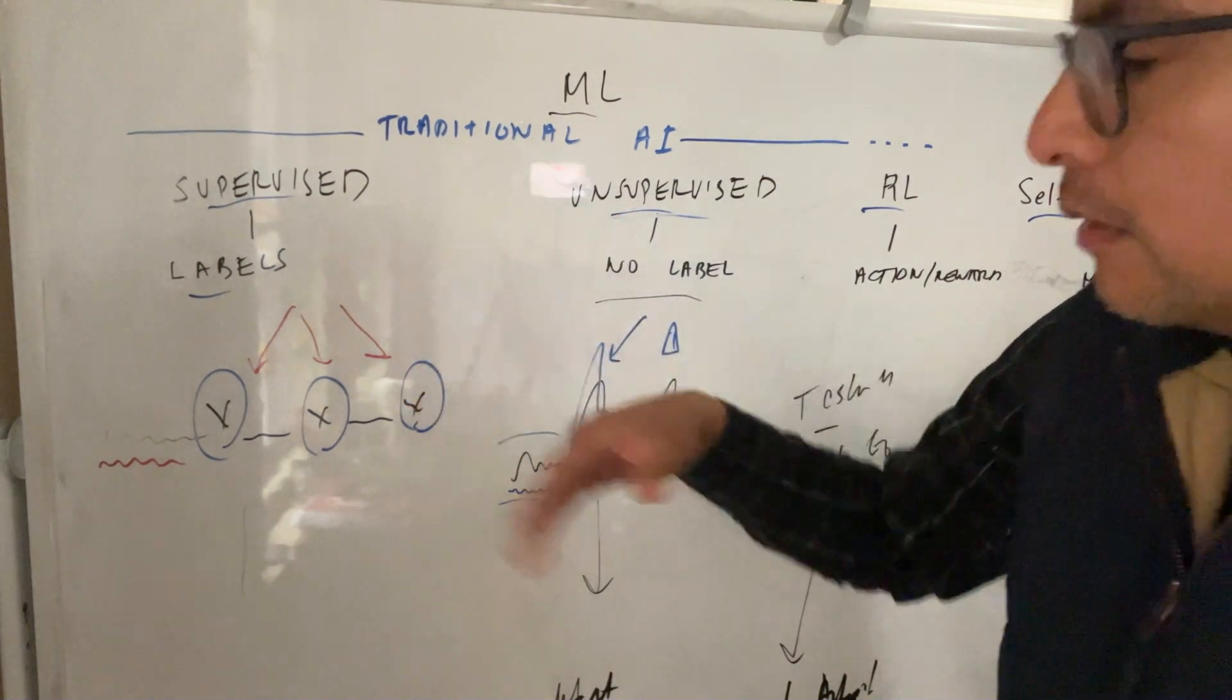Essentially, what we do is we feed a large corpus of text into an algorithm, and we ask it to mask one of the words, and then try to guess what that word is, and then grade itself. The nice thing about this is that you don't have to manually go in and add the labels. The algorithm is kind of doing that on its own. And the best example of this is going to be in ChatGPT.